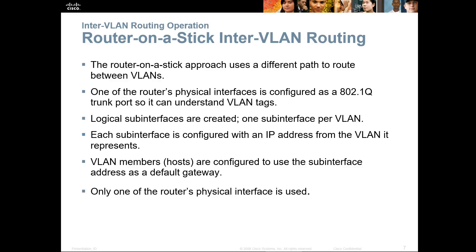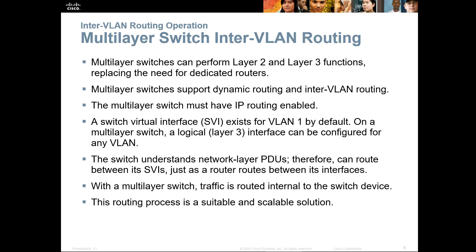Each VLAN would be stamped with the appropriate 802.1Q tag. VLAN members or hosts were configured at a specific exit on the router known as a sub-interface, which acts as their default gateway — a virtual interface on the router. Only one of the router's physical interfaces is used. With multi-layer switches, which can perform both Layer 2 and Layer 3 functions, we no longer need to tie routing to a dedicated router.